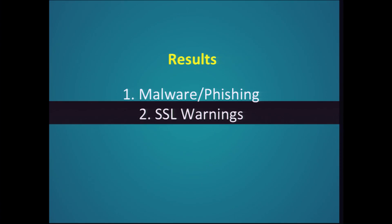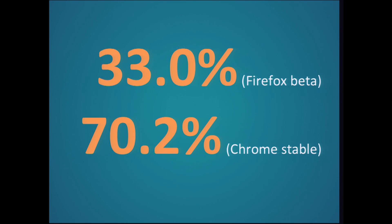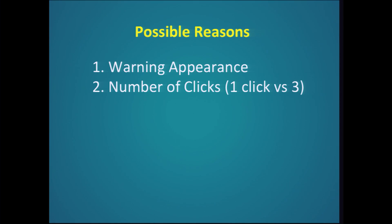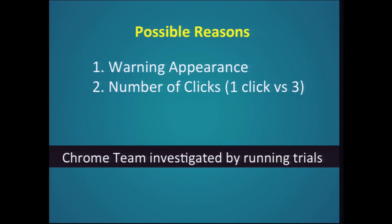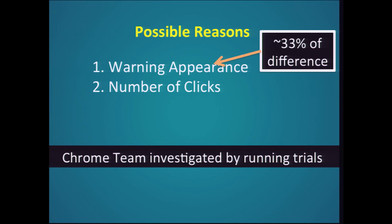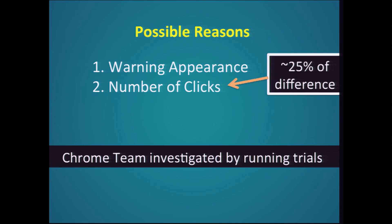The next thing is what we saw for SSL warnings. The click-through rate for Firefox is 33%, and nearly 70% for Chrome SSL warnings — not very good for Chrome. There were two possible reasons: warning appearance and number of clicks. We asked the Chrome team to investigate, and they copied the Mozilla Firefox warning into Chrome and deployed it. They found that nearly a third of the difference can be attributed to just the color and icons that Mozilla Firefox uses, and a quarter of the difference can be attributed to Mozilla Firefox requiring more clicks to bypass the warning.